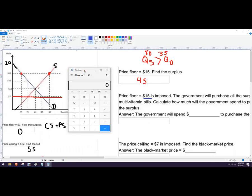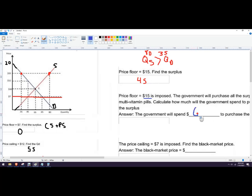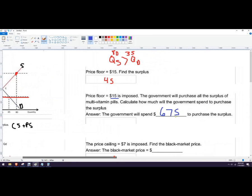So all we need to do is just say that the government needs to buy those 45 units at $15 each. So it's $675, and government will spend $675 to purchase the surplus.